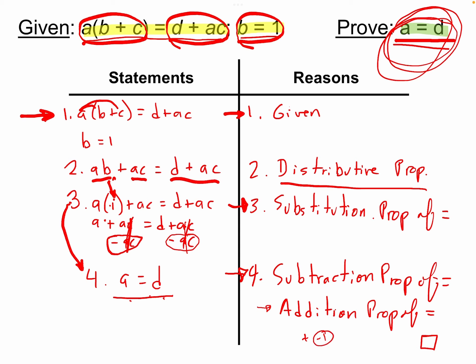The reason for step four is the subtraction property of equality. You could also think of it as the addition property of equality if you consider adding negative ac — both work. The last thing you'll notice is a box called a tombstone at the end, which we use as mathematicians to signify that we're done with the proof.